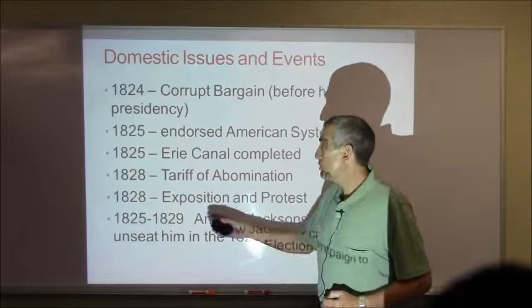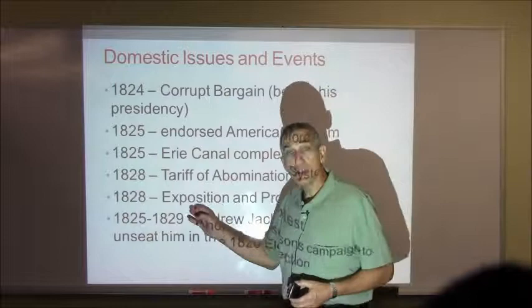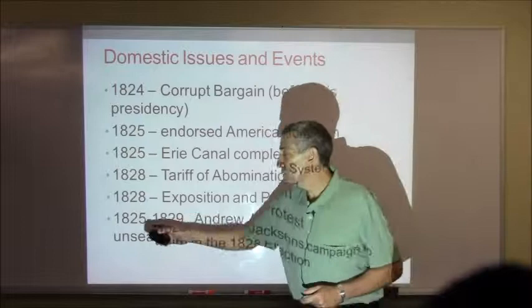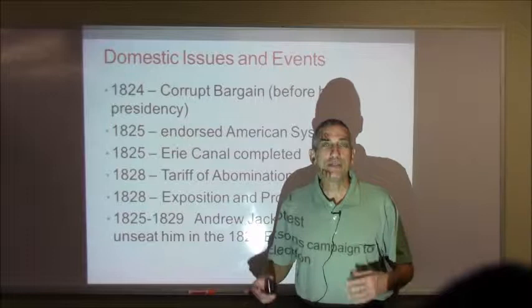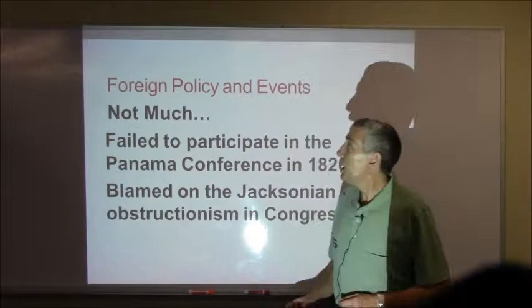As a result of the tariff, John C. Calhoun writes something called Exposition and Protest — a pamphlet he writes anonymously in which he exposes the tariff as being unfair and protests it. And during the entire period of 1825 to 1829, Andrew Jackson campaigned for four full years that he was going to be president in 1828 — and by gosh, he got it.